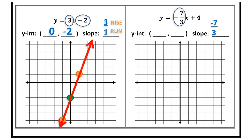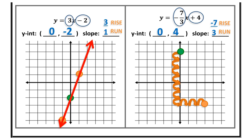y equals mx plus b — b is my y-intercept, so it's 4, and (0, 4) is my y-intercept. Using my slope of negative 7 over 3: my rise is negative 7, meaning I go down 7 places — 1, 2, 3, 4, 5, 6, 7. My run is positive 3, so I go horizontally to the right 3. That's why I applied the negative just to my rise — I wasn't running in a negative direction, just rising in a negative direction. Once I have my two points, I connect the dots.